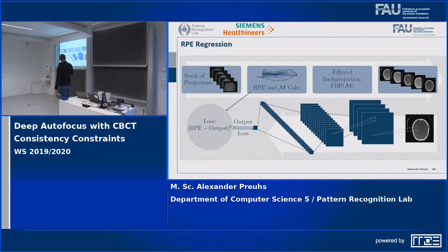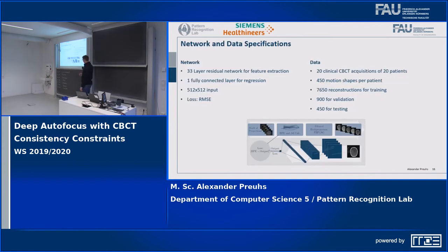We do this many times to generate a large amount of training data per patient, and feed it into a network that tries to regress the reprojection error. We use a 33-layer residual network with a fully connected layer at the end.